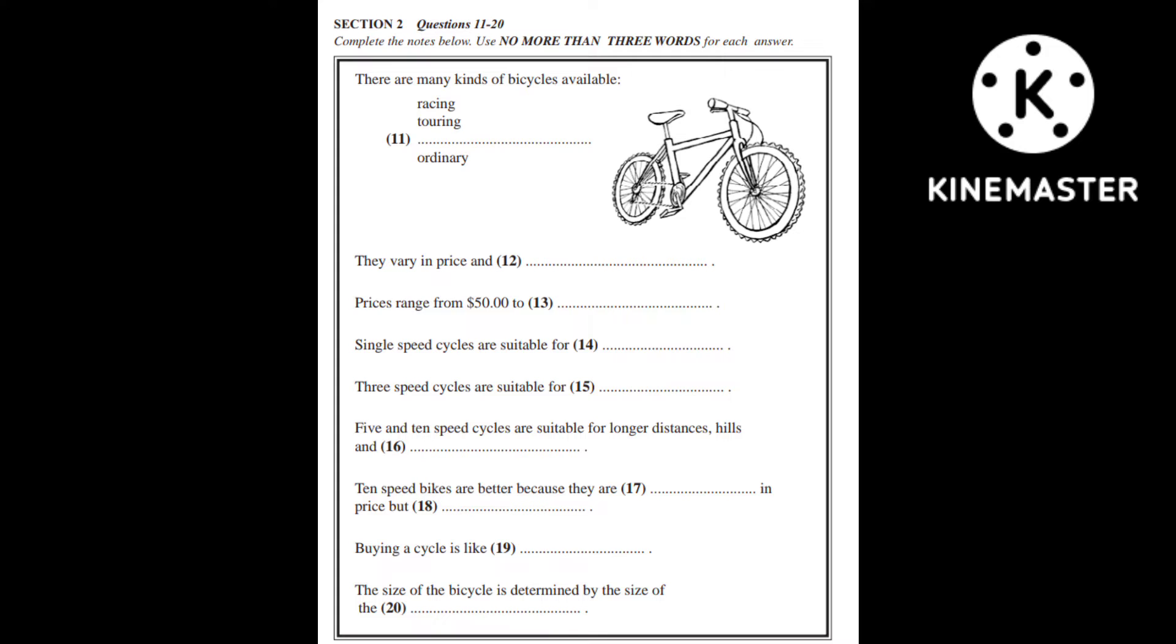Now the next thing we need to look at is size. Buying a cycle is like buying clothes. First of all you find the right size and then you try it on to see if it fits. Contrary to what you might imagine, the size of the cycle is not determined by the size of the wheels, except in children's cycles, but by the size of the frame. So you'll need to measure the length of your legs and arms to get a frame that is the right size for you. Well, that's all from Helpful Hints for today. That is the end of section two. You now have half a minute to check your answers.